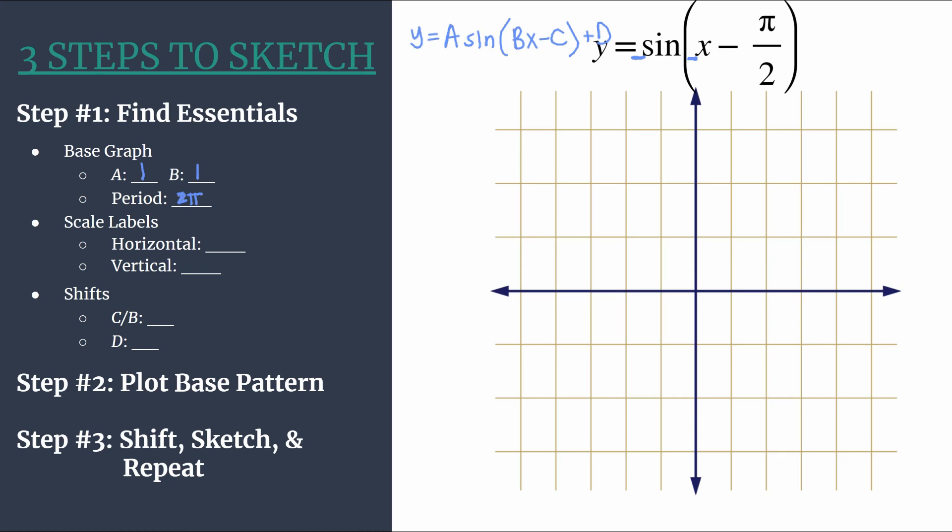Now we can go ahead and label our scales, label our axes, choose our scale. To do that for horizontal axis we just take the period and divide by four. So two pi divided by four, that'll be pi over two.